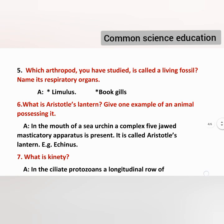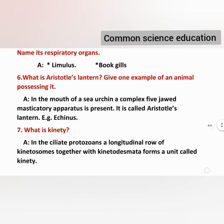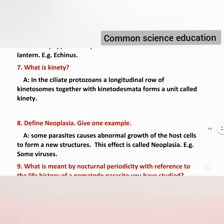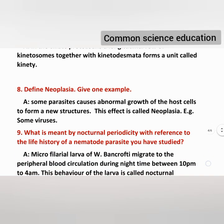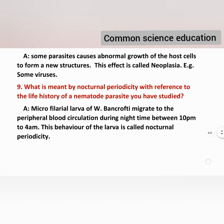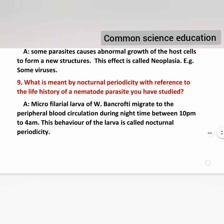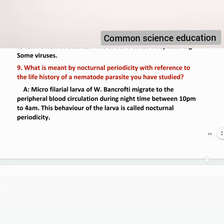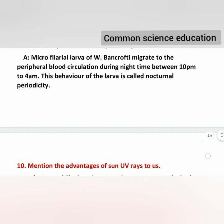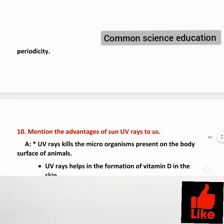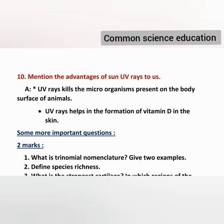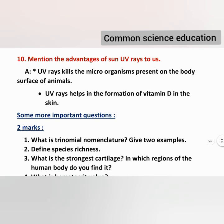One question is: What is Aristotle's Lantern? Give an example. In your scheme of evaluation, you have one mark for definition and one mark for example. If you mention Aristotle's Lantern correctly, you will get one mark for definition and one mark for example. You can also mention the advantages of sun and UV rays — there are only two advantages. You can use one mark for example.